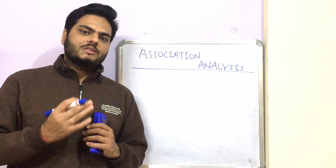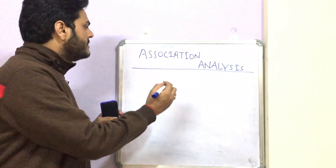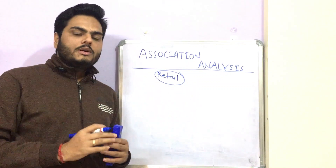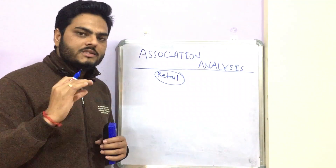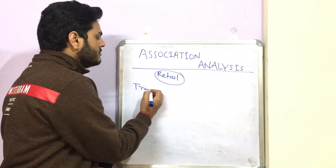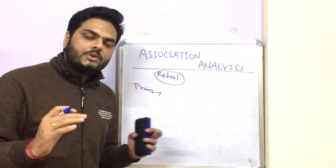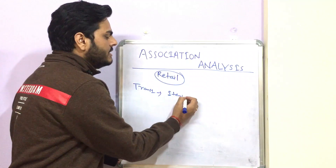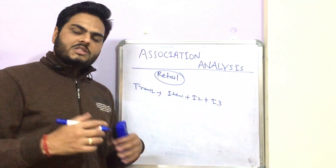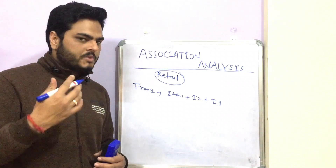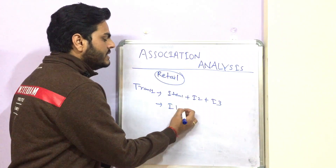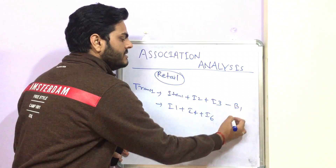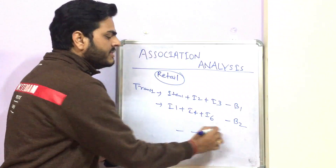Association analysis typically works for retail scenarios. In retail transactions we have details of transactions or items in the transaction. For example, transaction one is one set of items that one customer buys from a shop or superstore — transaction one will have item one plus item two plus item three. Similarly, another customer may buy item one plus item four plus item six — so this is basket one and this is basket two.